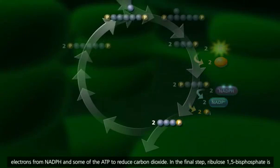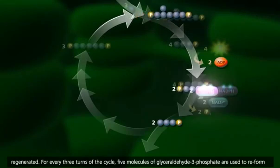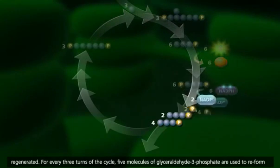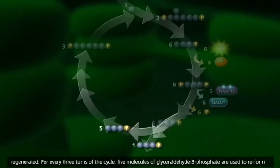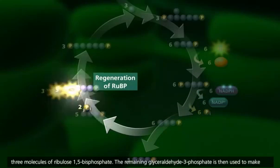In the final step, ribulose-1,5-bisphosphate is regenerated. For every three turns of the cycle, five molecules of glyceraldehyde-3-phosphate are used to reform three molecules of ribulose-1,5-bisphosphate.